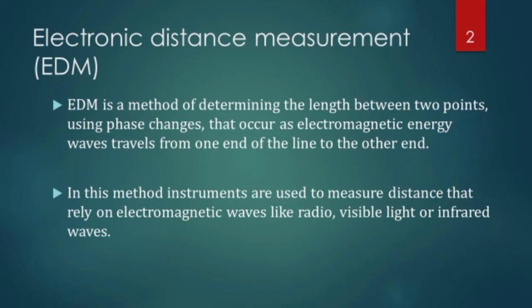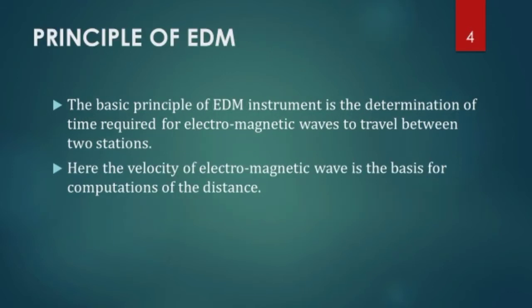And the waves like radio, visible and infrared waves are used for this transmission and reception, accuracy and precision will be varied accordingly. The principle of EDM is the concept that we have discussed in that sketch. The basic principle is determination of time required for electromagnetic waves to travel between two stations. Velocity of that wave will be the basis of all computations. If you are taking a radio wave you will be having a different velocity for it and if you are taking visible light you will be having a different velocity. Using that velocity v into t you will be calculating distance.